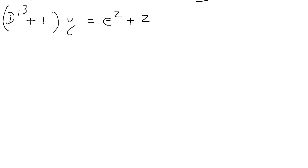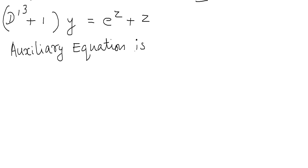Now we have to find the solution of y. y will always be the sum of complementary function plus particular integral. Let us find the complementary function. For that we have to find the auxiliary equation of D'³ + 1 = 0. For finding the auxiliary equation, we substitute the variable m instead of D'.